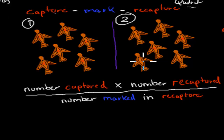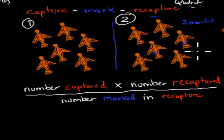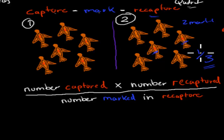Step two: we recapture six birds again and see how many have the marks. In this case, four have no marks, but two of them are marked. So two are marked out of our six recaptured. We originally marked six, but when we recaptured, only two had marks — meaning the marked ones make up two-sixths, or one-third, of our captured population. So we estimate the total by multiplying by three.